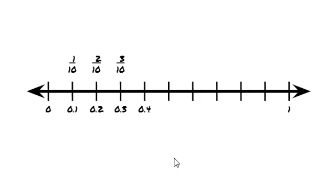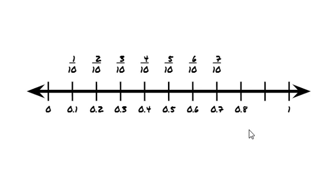You got it — 4 tenths, which can be written as a fraction like 4 tenths. Then 5 tenths, which is halfway there, which can also be written as 5 tenths. 6 tenths, which is 6 tenths. 7 tenths as a decimal, 7 tenths as a fraction. 8 tenths as a decimal, 8 tenths as a fraction. 9 tenths as a decimal, and 9 tenths as a fraction.